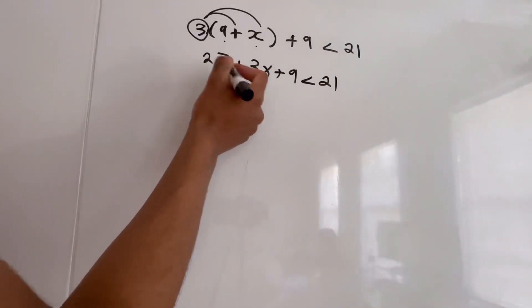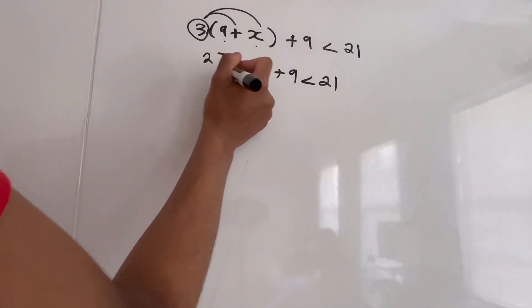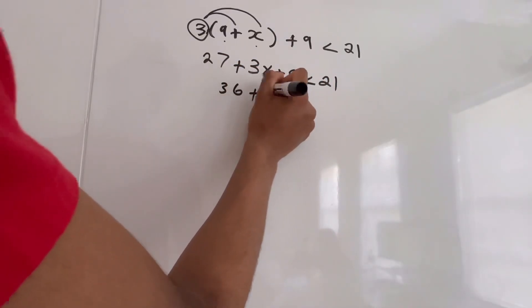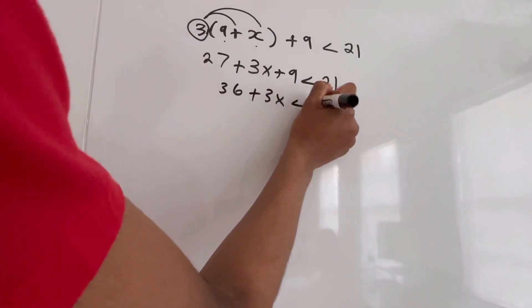And now since we could just add 27 to 9, we're going to do that. 27 plus 9 is 36, plus 3x is less than 21.